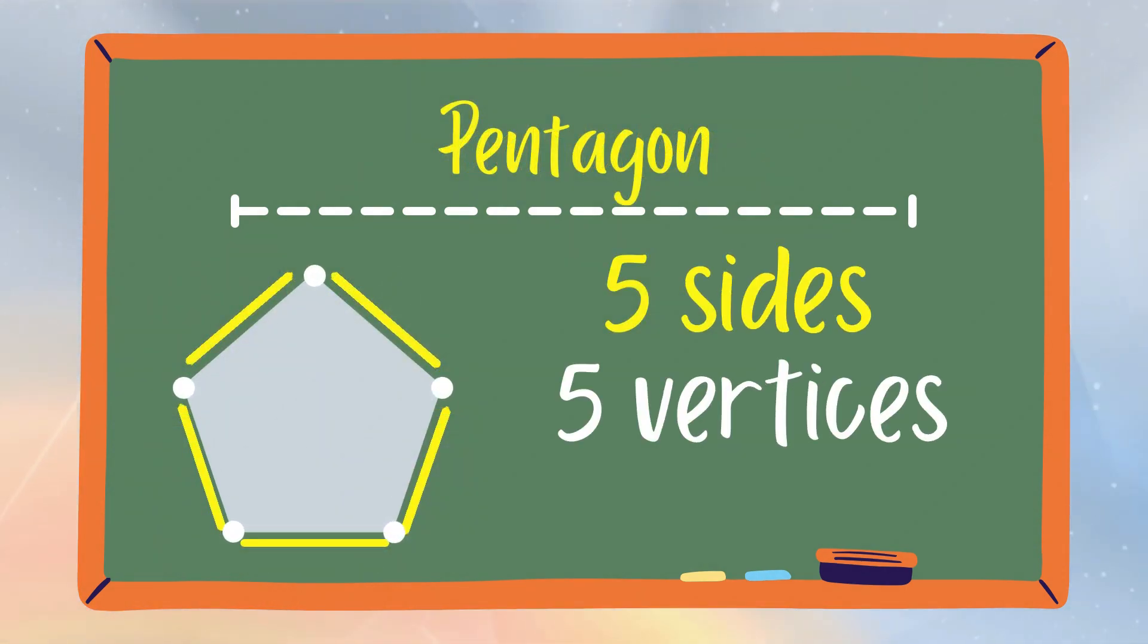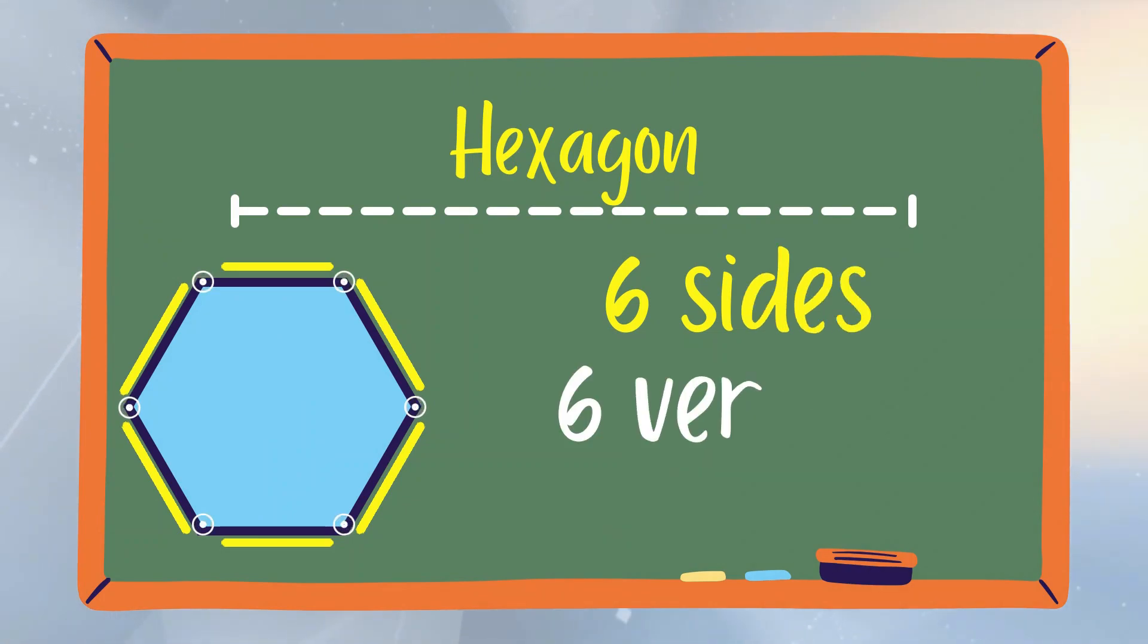Pentagon is a polygon that has five sides and five vertices. Hexagon is a polygon that has six sides and six vertices.